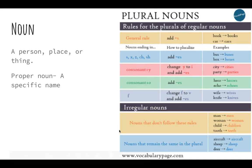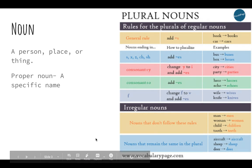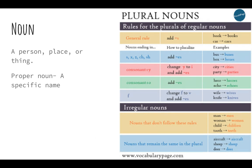Let's start with nouns. A noun is a person, place, or thing. We have common nouns and proper nouns. Common nouns are your regular people, places, things — like kitchen, refrigerator, dog, couch, rug, tree — just whatever. Any person, place, or thing.